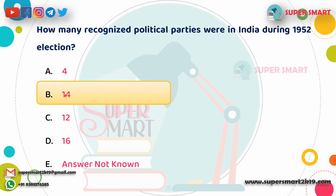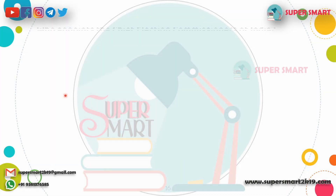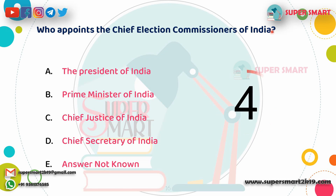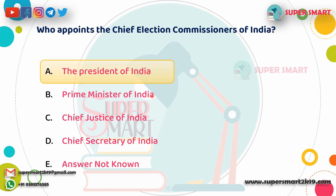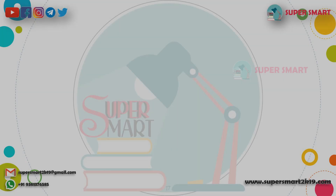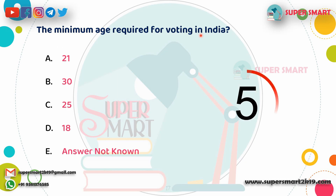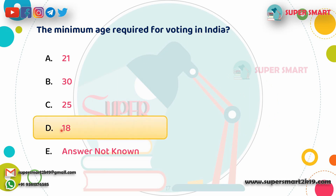Who appoints India's election commissioners? The President of India appoints them. The minimum age required for voting in India is 18 years.